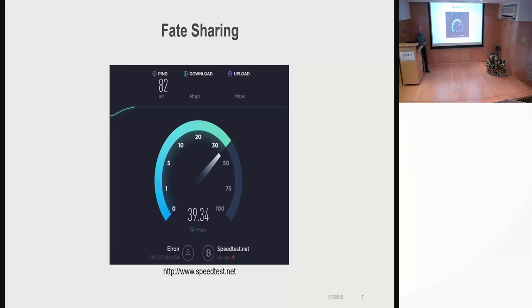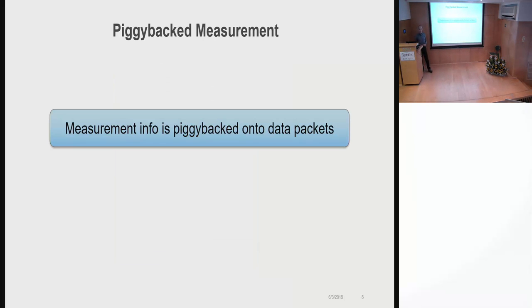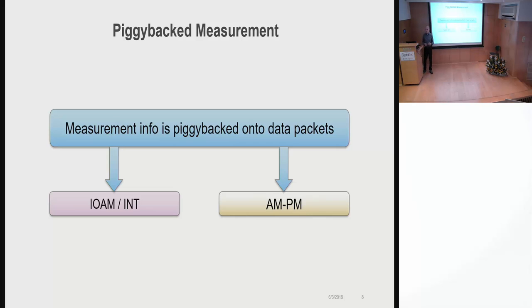Because of fate sharing, what we've been hearing a lot about in the last few years is piggybacked measurement. It's basically the ability to take the measurement information and piggyback it onto actual data packets, and this approach is used for example in IOAM and INT, which are very well-known protocols from the last few years, and also in AMPM, which is what we talk about today.